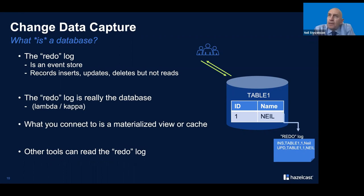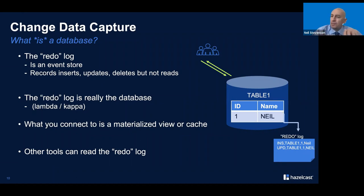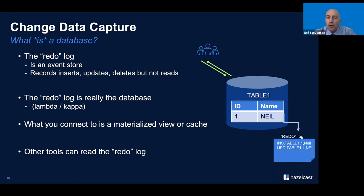Here's where we need to take a view from a distance. That redo log is an event store - it records changes to the database: inserts, updates, and deletes. It doesn't record reads. There's a perspective where you can think of the redo log as actually being the database - if it's the copy you go to when the database is corrupted, then the log is really your system of record. What you think of as a table in a relational database is really just a materialized view of the log file.